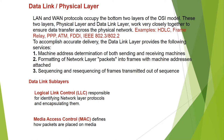To accomplish reliable delivery, the data-link layer provides the following services: machine address determination of both the sending and receiving machine — that is, the MAC address (Media Access Control address), which works at the physical and data-link layers. Formatting of network layer packets into frames with machine addresses attached. MAC address, or machine address, is the address on the network interface card attached to each computer.